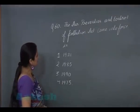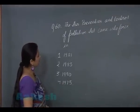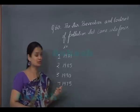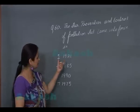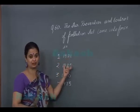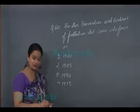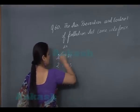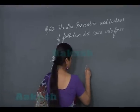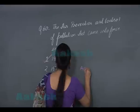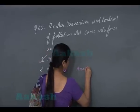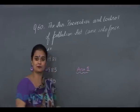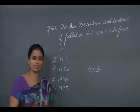Question number 60: the Air Prevention and Control of Pollution Act came into force in the year 1981. This is a theoretical question and the answer is 1981, making the correct answer option 1.